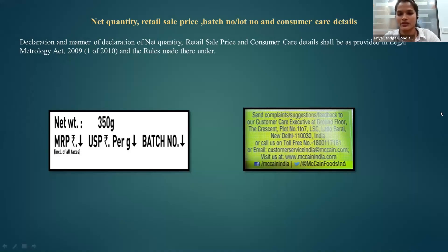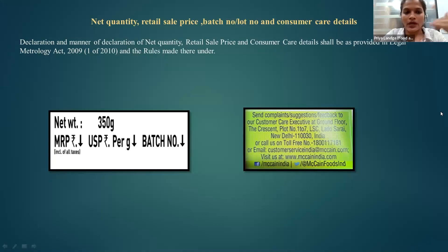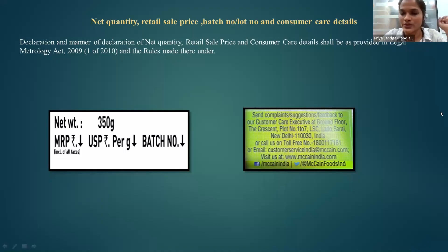On to the next topic: net quantity, retail sales price, batch number, and consumer care details. As consumers, we always look at the label for the net quantity, the retail price (that is the MRP), then the batch number, and consumer categories. The MRP falls under the Legal Metrology Act, so one has to follow the Legal Metrology Act while disclosing this on the label.